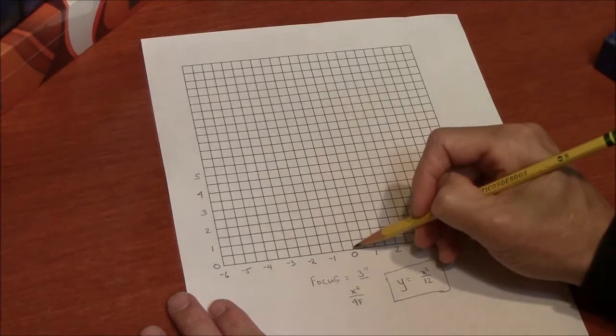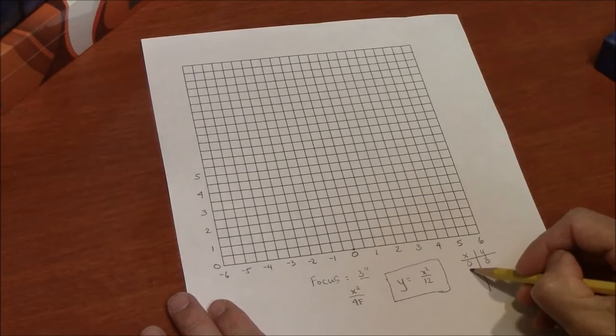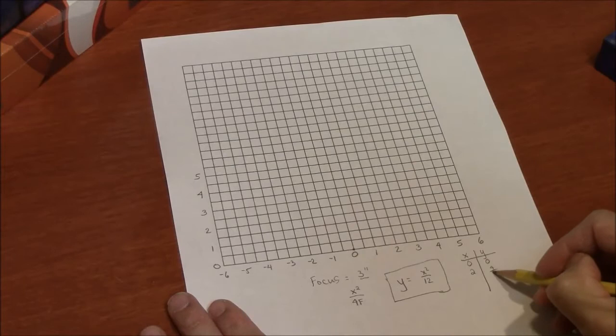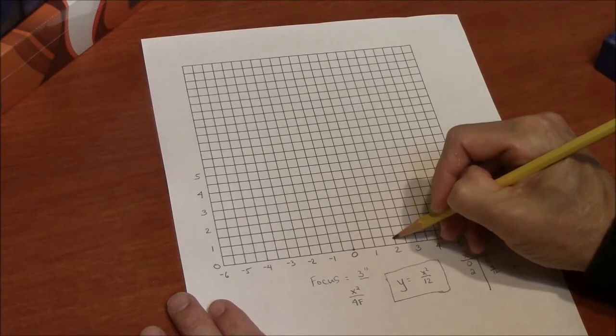So my first point can be 0, 0. I'll make a t-chart here. x, y, 0, 0. If x equals 2, y equals 4 twelfths, and that is 1 third. So here's x equals 2, y equals 1 third. I've got it scaled so each box is 1 half. So 1 third would be right about here.